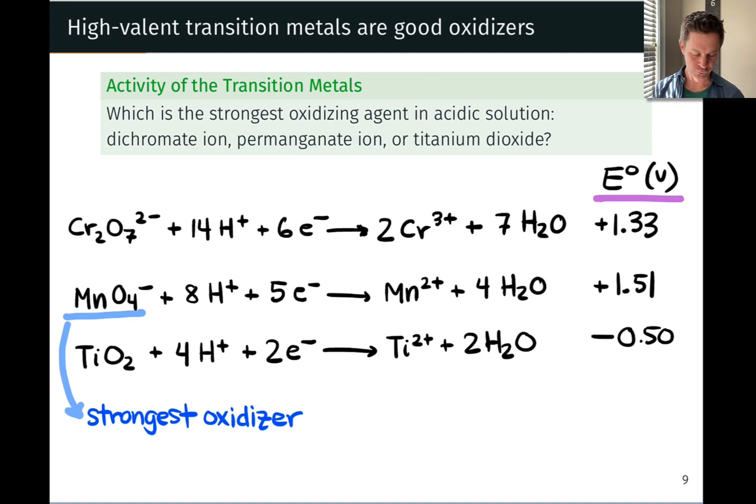So a difference of about two volts from the really good oxidizer permanganate, known for being a good oxidizer, to TiO₂, which is not known for being oxidizing really at all.